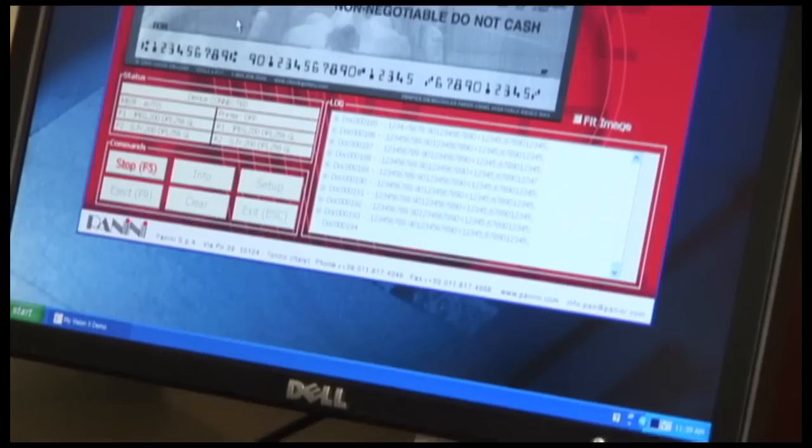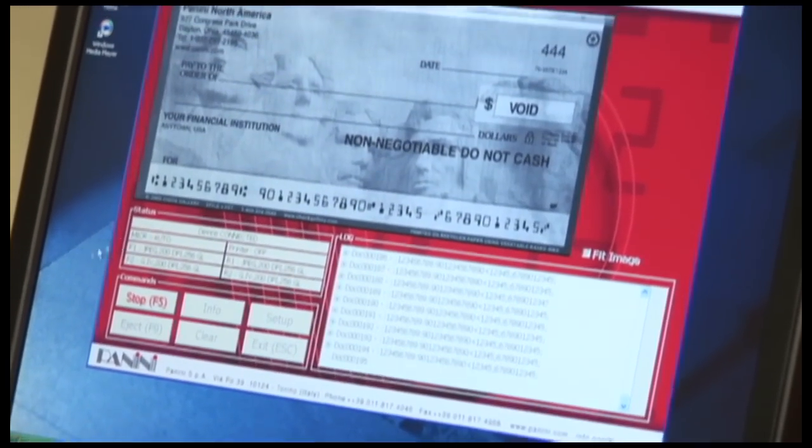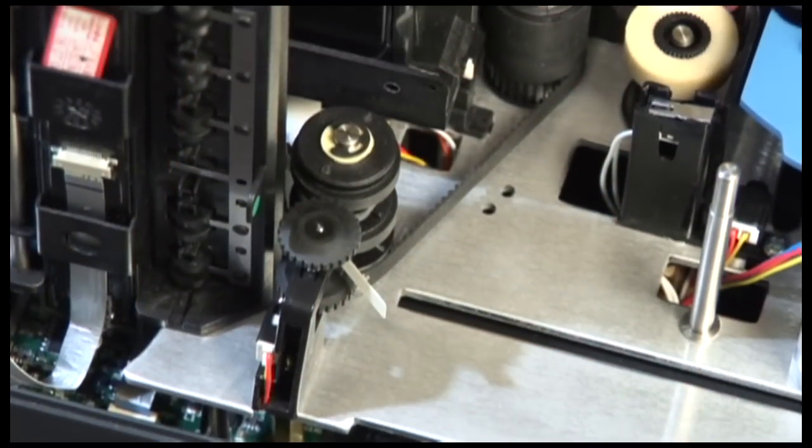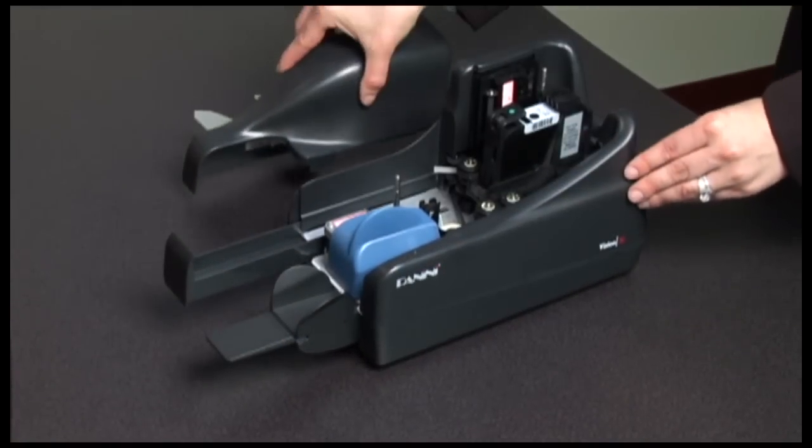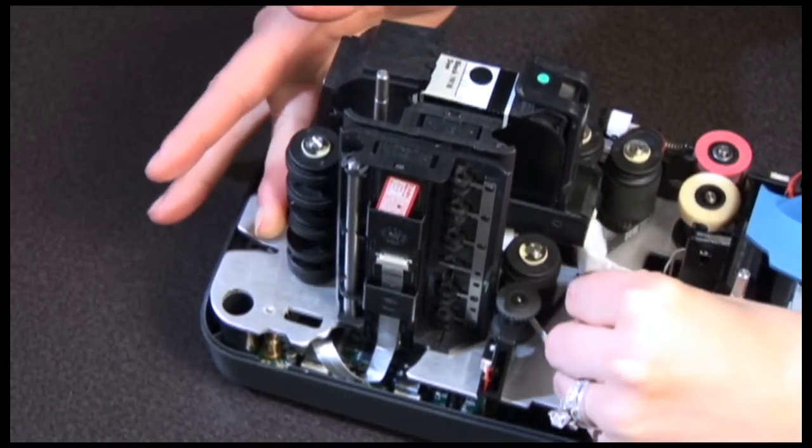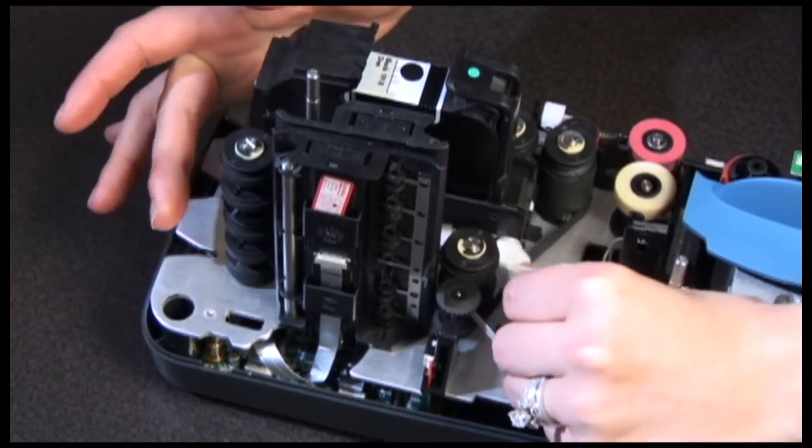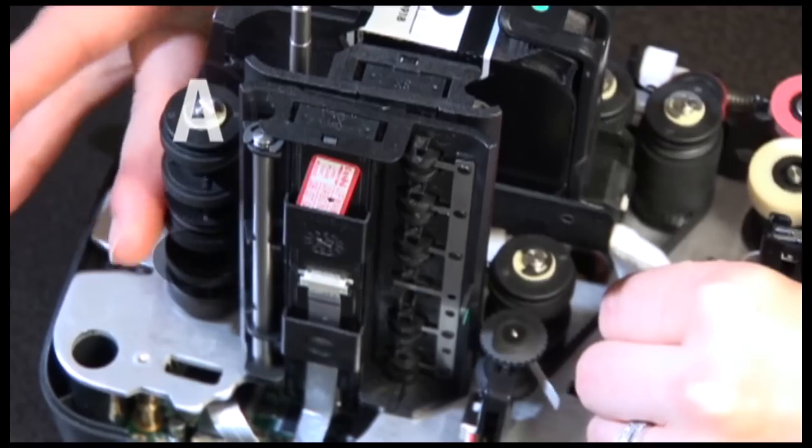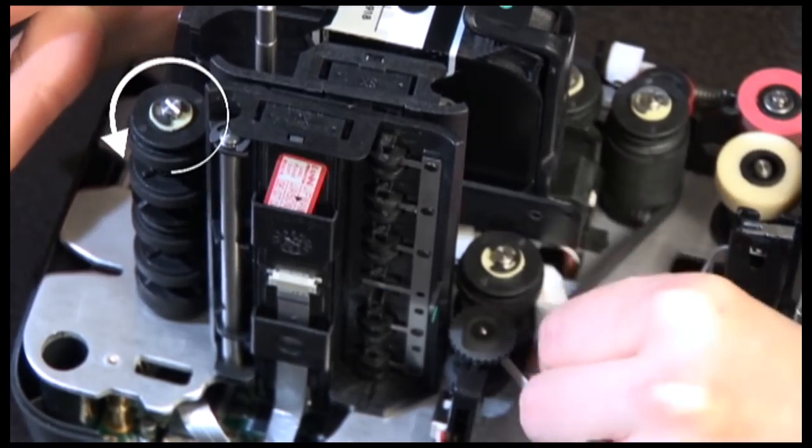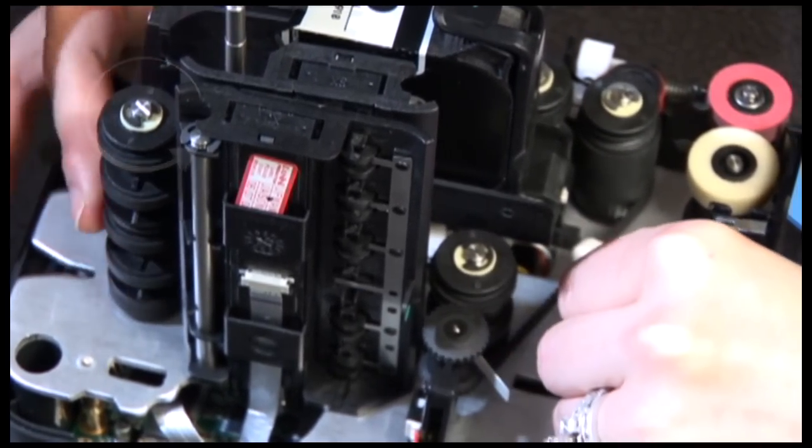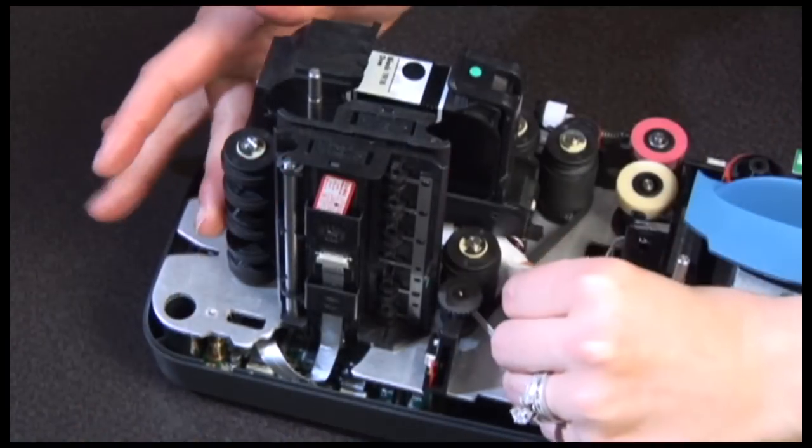Cleaning the reading transport belt may be necessary if the operator notices an increase in the number of micro-rejects. There is a single black belt in the scanner and it is easily noticed when the inner cover has been removed. Clean the external surface of the belt with a soft lint-free cloth dampened with isopropyl alcohol. Turn pulley A, the tall transport roller located behind the image camera, counterclockwise to move the belt in order to clean the entire belt surface.